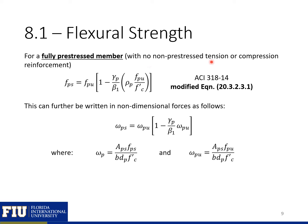If we have a fully pre-stressed member with no non-pre-stressed tension or compression reinforcement, then the rho and rho-prime components of the previous equation go away, and our equation simplifies. In this class, we'll mainly look at fully pre-stressed members, so we'll skip straight to this simplified equation. Note that in design, it's sometimes easier to use non-dimensional forms of these equations, which are shown here.